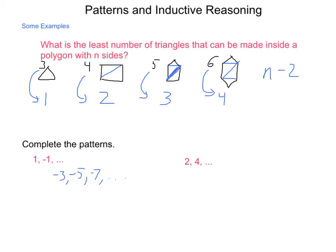But somebody else might say, well, it's just multiplying by negative one. So we could have 1, -1, 1, -1.